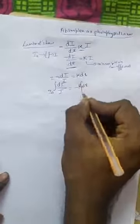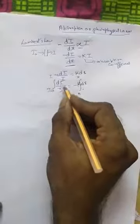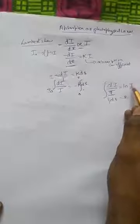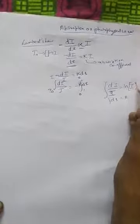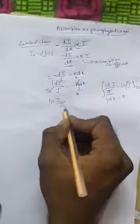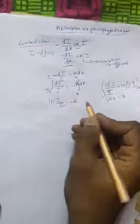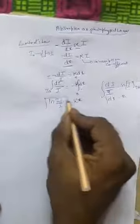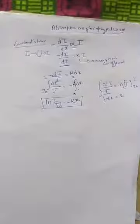Taking the negative to the other side, the integral from I₀ to I of dI/I equals minus K times dx, integrating x from 0 to x. The integral of dI/I equals ln I, and the integral of dx equals x. Applying the limits: ln I minus ln I₀, which becomes ln(I/I₀), equals minus K times x. This is the equation for Lambert's Law.